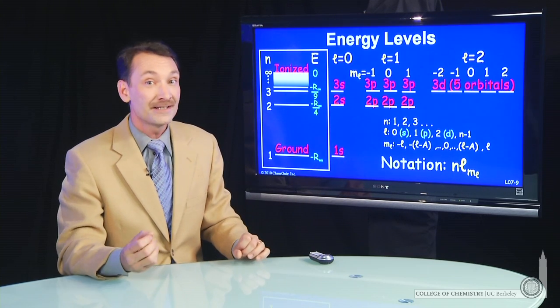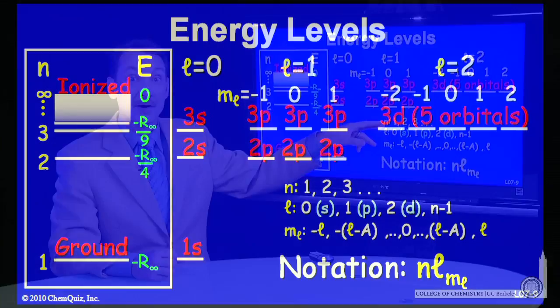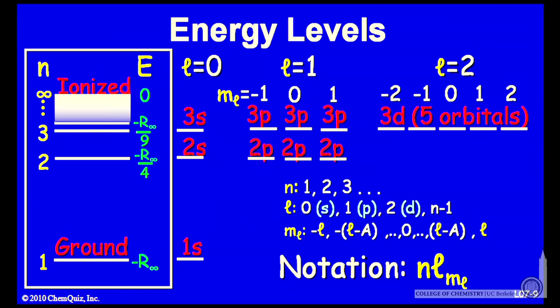The orbitals will be designated by three quantum numbers: n, l, and m sub l. The principal quantum number n will determine the overall energy.